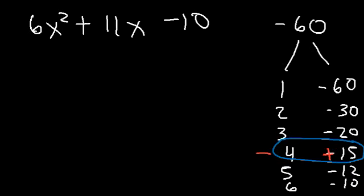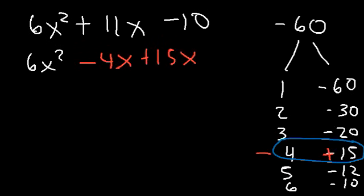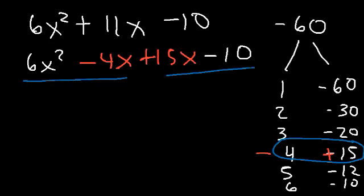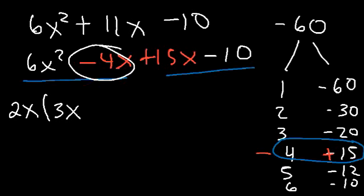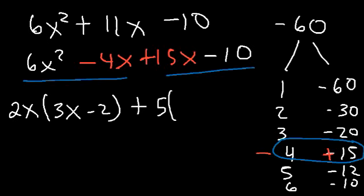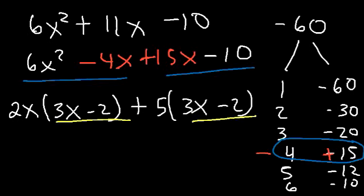So let's replace 11x with negative 4x plus 15x, and then we can factor by grouping. Let's take out the GCF from the first two terms — we can take out 2x. 6x squared divided by 2x is 3x, and negative 4x divided by 2x is negative 2. For the last two terms, we take out a 5 from 15 and 10. 15x divided by 5 is 3x, and negative 10 divided by 5 is negative 2. Taking out a factor that makes these two binomials the same confirms we're on the right track.